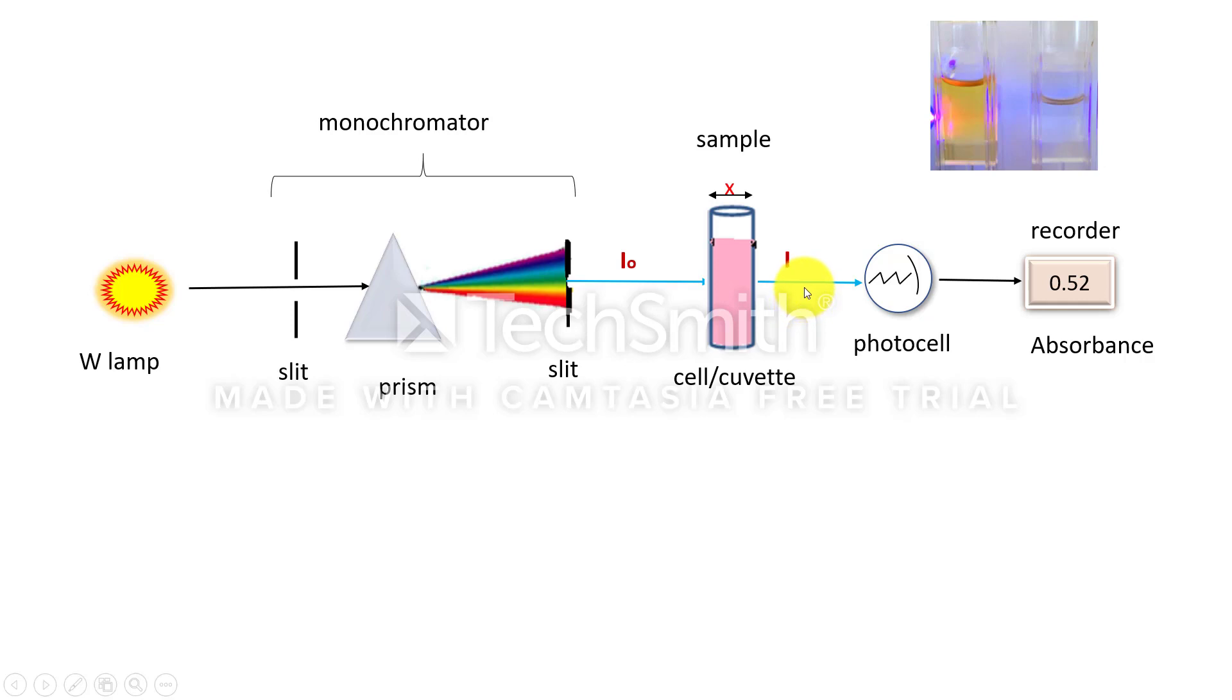Again the same monochromatic radiation is allowed to pass through it and the transmitted light will fall on the photocell. Now the photoelectricity generated will be proportional to intensity of transmitted light. Since some amount of radiation will be absorbed by the sample,